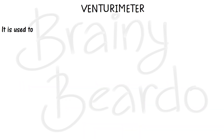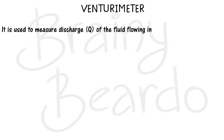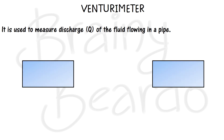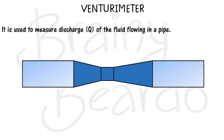A Venturimeter is a device which is used to measure the discharge of a fluid flowing through a pipe. When we say discharge, it is nothing but the volume flow rate of a fluid. The Venturimeter is fixed between a pipe where the fluid is flowing, and the diameter of the Venturimeter is the same as the diameter of that pipe.